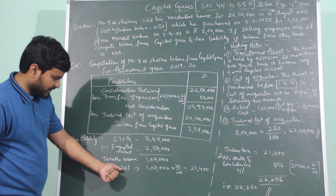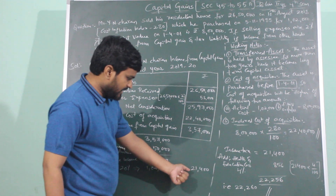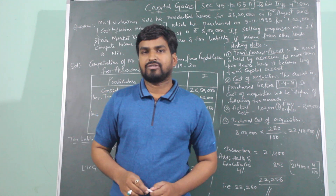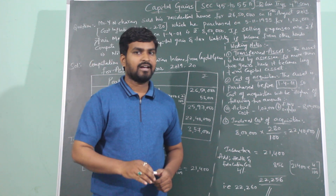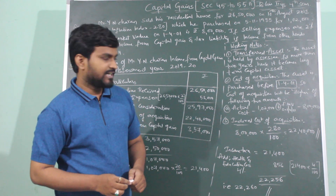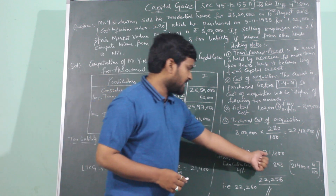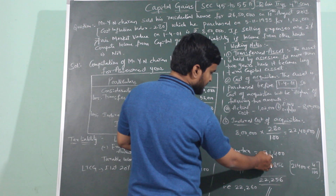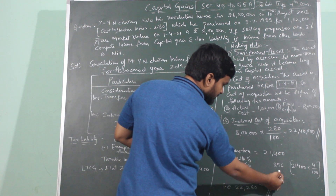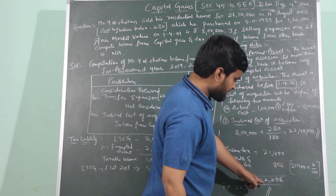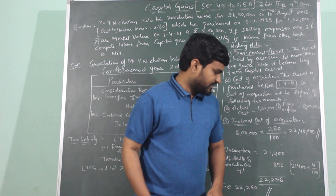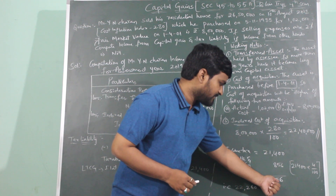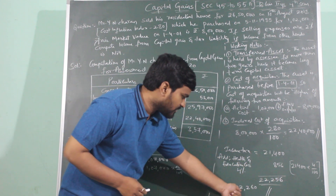The tax rate on long-term capital gain is flat 20%. So tax = 1,07,000 × 20 ÷ 100 = 21,400. No surcharge is applicable here. Health and education cess is 4% of income tax: 21,400 × 4 ÷ 100 = 856. Total tax liability = 21,400 + 856 = 22,256. Since income should be rounded off to the nearest 10 rupees and 56 is closer to 60, the final tax liability is 22,260.